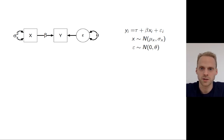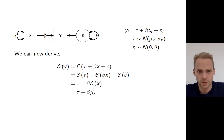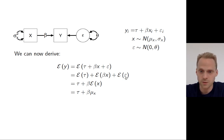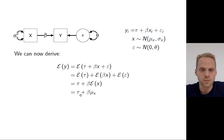Returning to our SEM model where X causes Y with an intercept and residual, we can derive that the expected value of Y equals the expected value of tau plus beta times X plus epsilon. That splits into: the expected value of the intercept (just tau), plus the expected value of the residual (zero, by definition), plus beta times the expected value of X. So we get tau plus beta times the mean of X, and that's the mean structure we showed before.